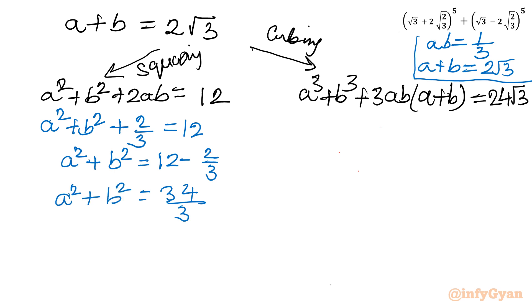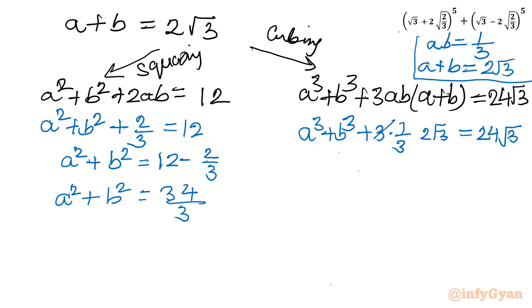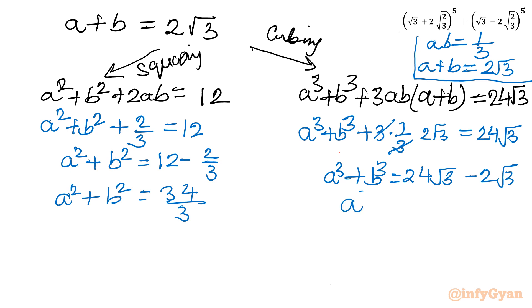For the cube equation: a³ + b³ + 3·(1/3)·(2√3) = 24√3. The term 3·(1/3)·(a+b) simplifies to 2√3, which cancels with the right side, giving a³ + b³ = 24√3 − 2√3 = 22√3.